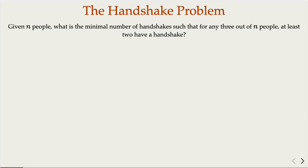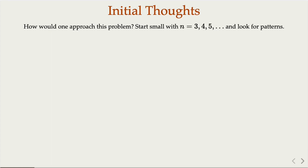You cannot have three people who do not have any handshakes with each other at all. For this group of n people, what is the minimum number of handshakes in total? When you see this kind of problem, the first thing you want to do is try out with small numbers.